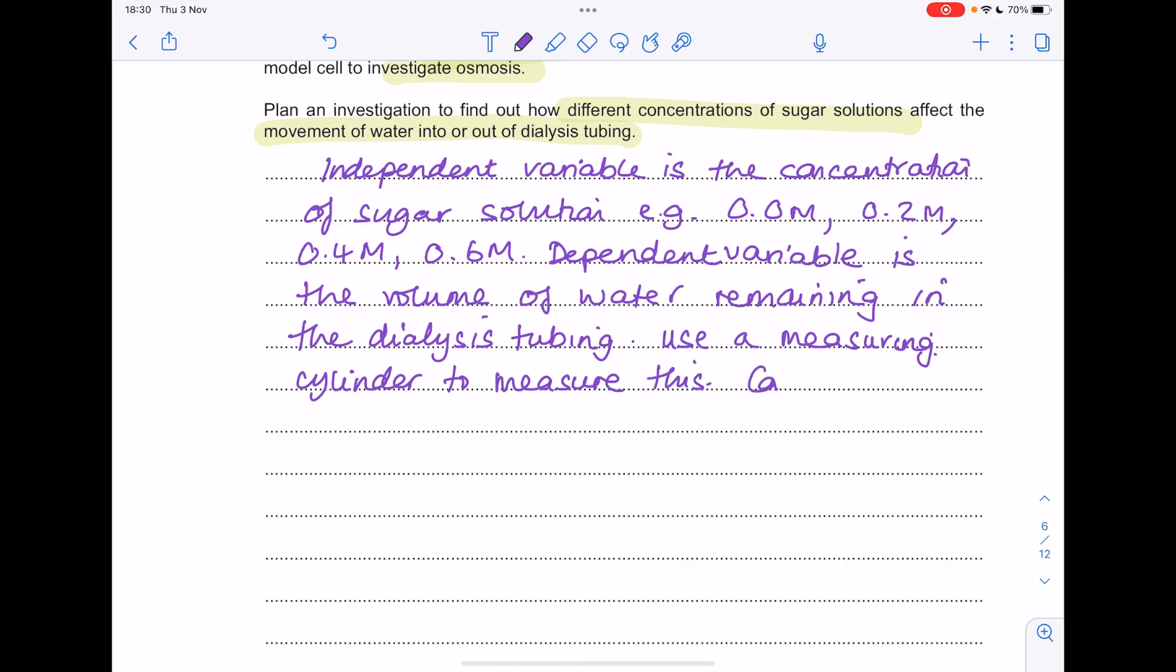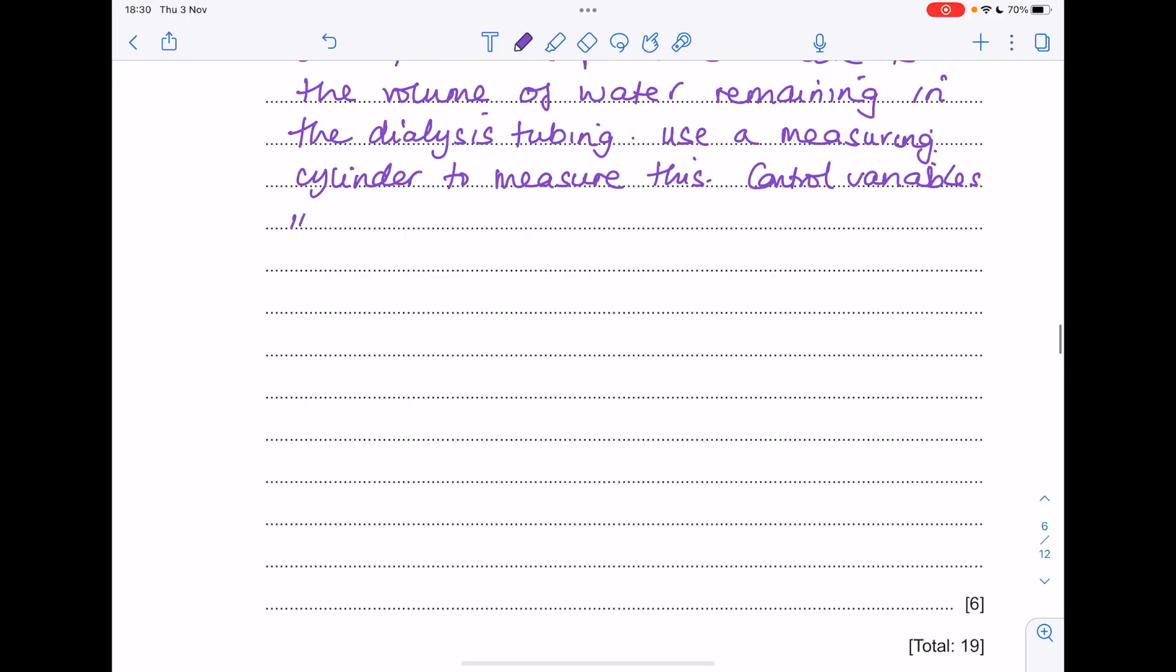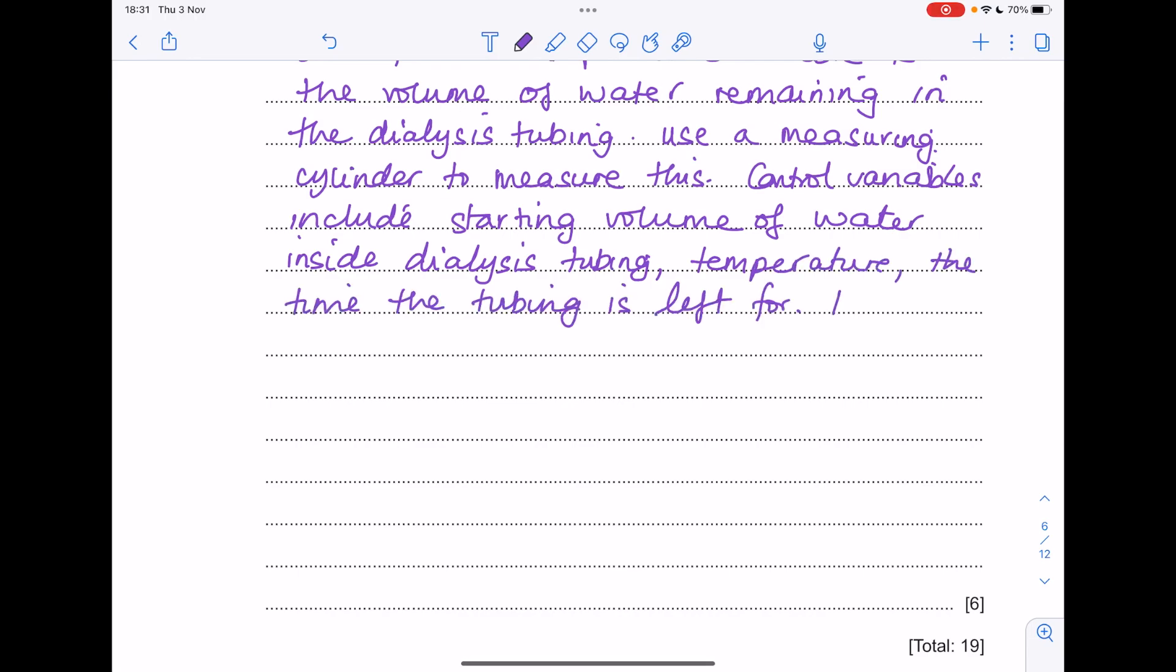Next up, we want our control variables. What are we keeping the same? The starting volume of water inside the dialysis tubing, the temperature, the time the tubing's left for. Remember, we always want to repeat. Wear goggles.